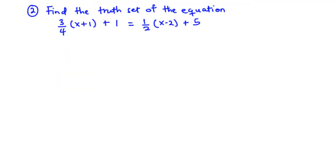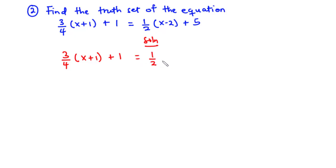Now let's solve the second question. Find the truth set of the equation: (3/4)(x plus 1) plus 1 equals (1/2)(x minus 2) plus 5. We are going to find the truth set for this equation. The first thing we need to do is to do away with the fractions. We have 2 fractions here. The LCM between 4 and 2 is 4.